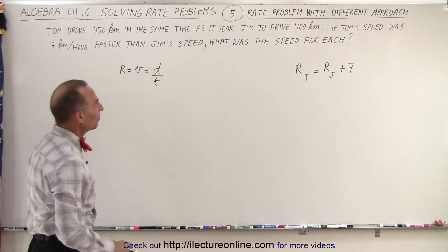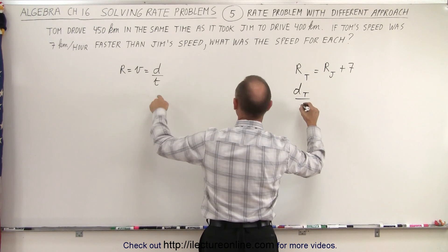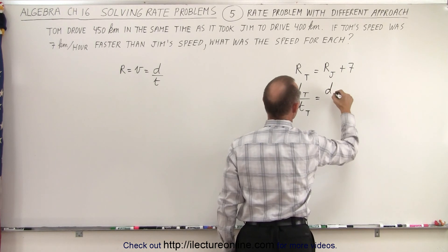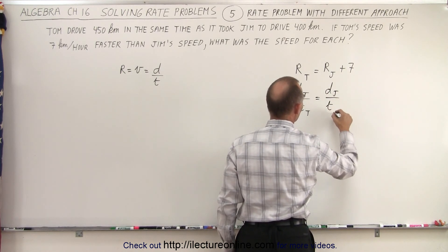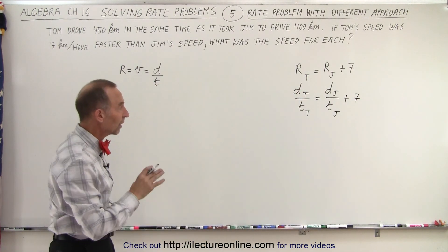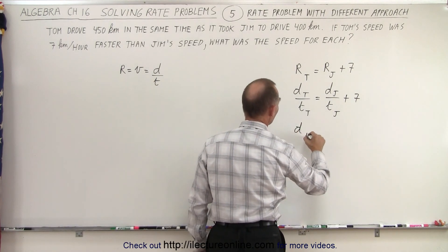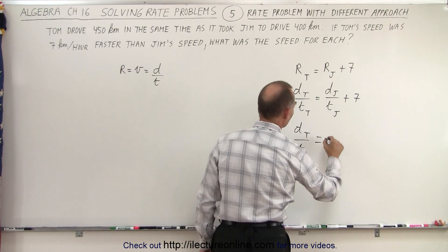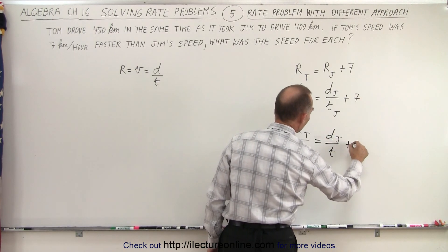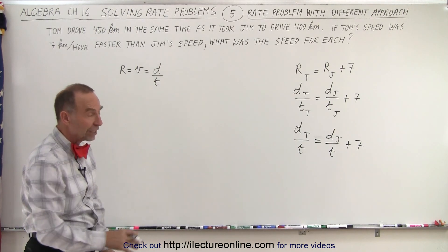So what we can then say is that the rate of Tom, which can be defined as the distance traveled by Tom divided by the time traveled by Tom, is equal to the rate of Jim, which is the distance traveled by Jim divided by the time traveled by Jim, and we need to add 7 to that. Notice that the time traveled by Tom and the time traveled by Jim is the same time, so this can be written as: distance by Tom divided by time equals distance by Jim divided by time, plus 7.